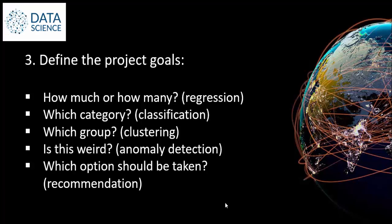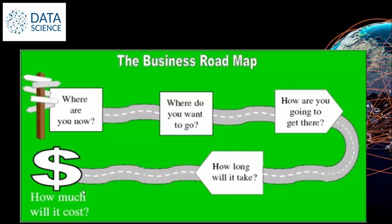The next step in business understanding is to define the project goal. Once we know the requirement, we can't directly start the project — some process needs to be followed. We have a detailed discussion with the Amazon team, stakeholders, and employees to understand which category the requirement falls under: regression, classification, clustering, anomaly detection, or recommendation system. Based on that discussion, we determine the project cost, delivery timeline, and milestones. At the end, the business wants to know only two things: what is the cost and when will the product be delivered.